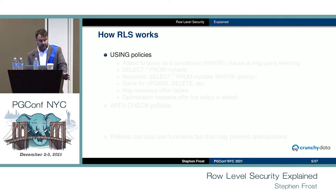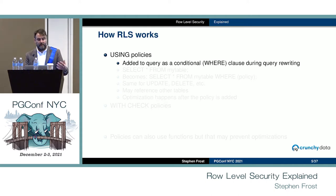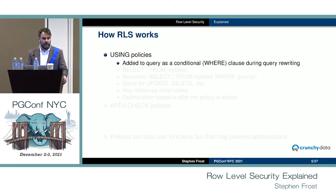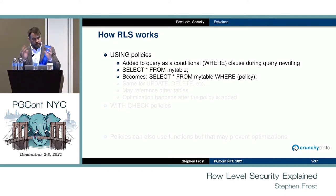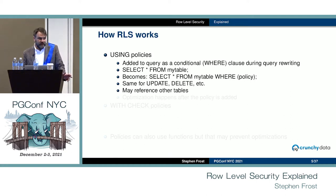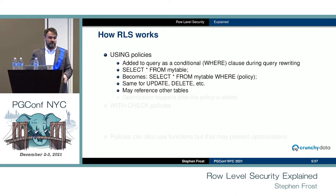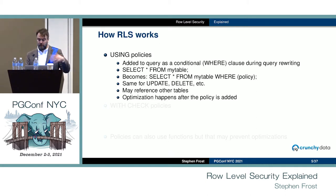The way RLS works is that USING clauses are added to each query as a conditional — basically into the WHERE clause. This happens during the query rewrite phase, pretty early on. In Postgres we do parsing, then query rewrite, then optimization, then execution. So if you have something like SELECT * FROM my_table and you have a policy, that becomes SELECT * FROM my_table WHERE policy. The same goes for UPDATE and DELETE. The things in that WHERE clause can be pretty much anything, including references to other tables or sub-selects.